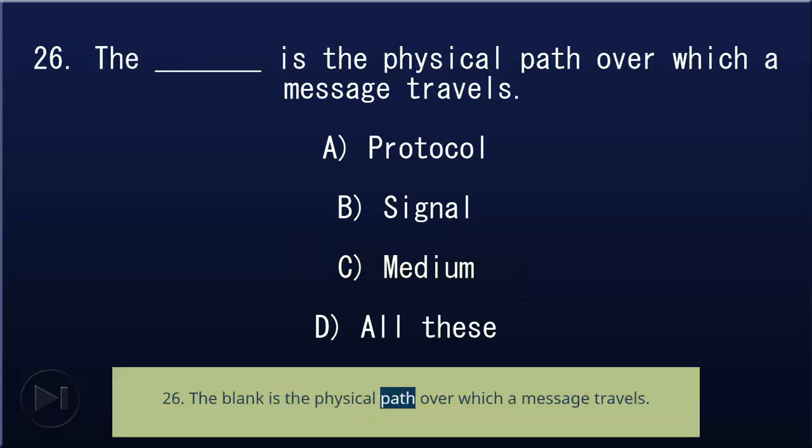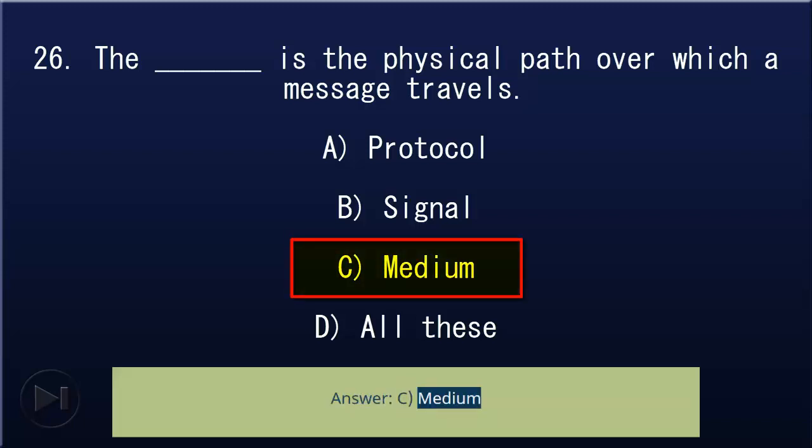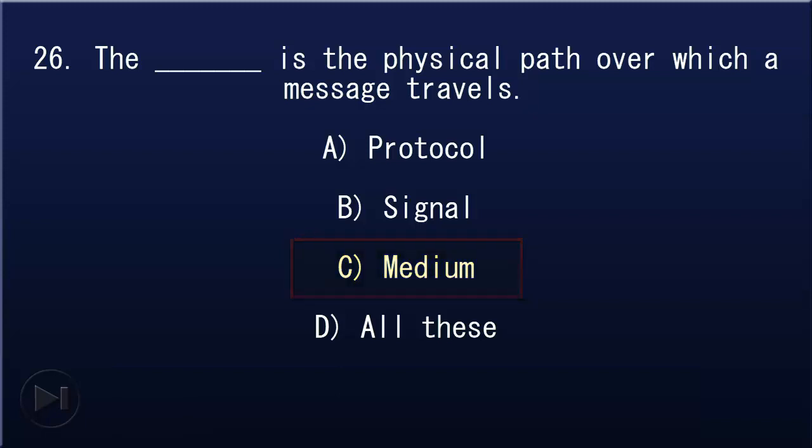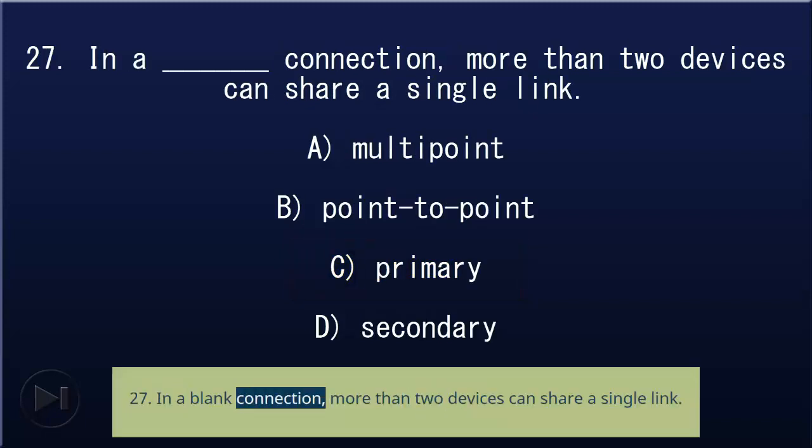26. The blank is the physical path over which a message travels: A) protocol, B) signal, C) medium, D) all of these. Answer: C, medium.